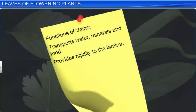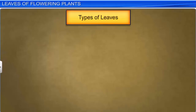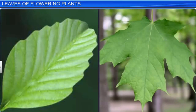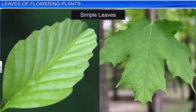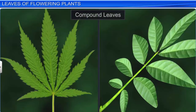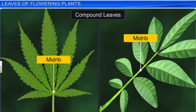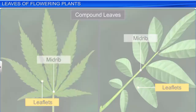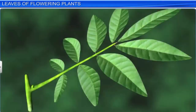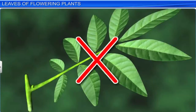The primary functions of the veins are to transport water, minerals, and food, and provide rigidity to the lamina. Based on the structure of the lamina, leaves are classified as simple and compound. The lamina of a simple leaf is usually entire; however, when it is incised, the incisions do not touch the midrib. In compound leaves, the incisions reach the midrib and break it into several leaflets. Both simple and compound leaves have a bud in the axil of their petiole; however, buds do not develop in the axils of the leaflets of a compound leaf.